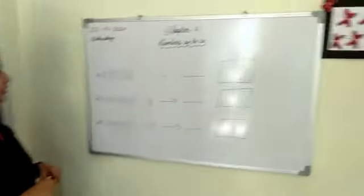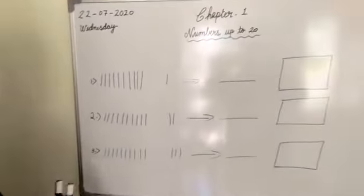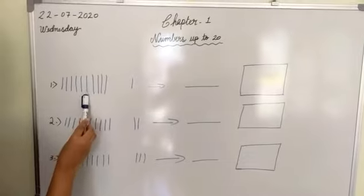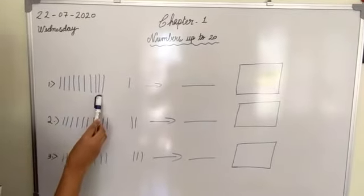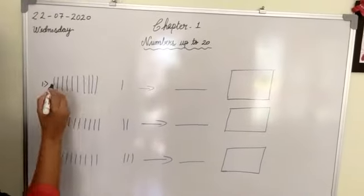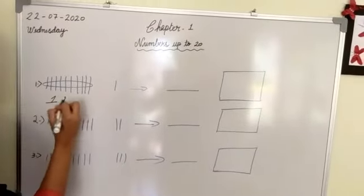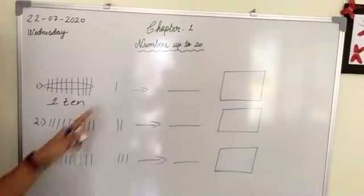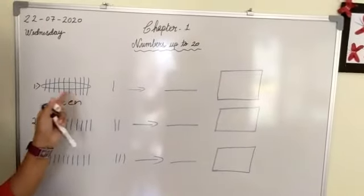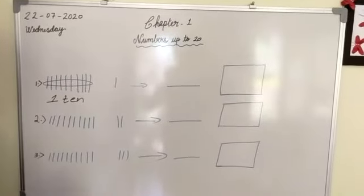Now we will go to some examples. See children, some sticks are given here. So how many sticks are here? 1, 2, 3, 4, 5, 6, 7, 8, 9, and 10. Now we make these into a group. We will get 1 ten. Then how many sticks are left? Only 1 stick. So count: 10, what comes after 10? 11. So we will get the number 11.